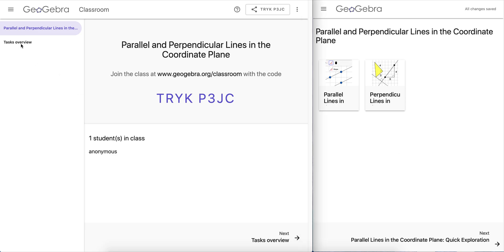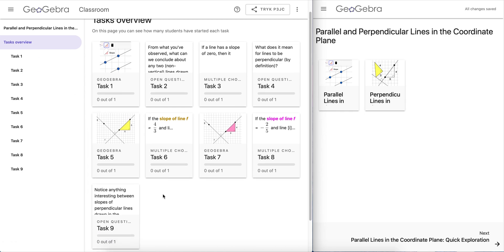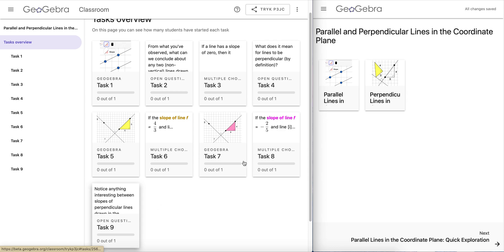If we look at the tasks overview page from the teacher, note we have nine tasks here. These nine tasks came from the two activities contained in the original GeoGebra book.